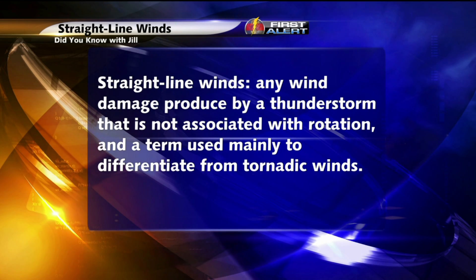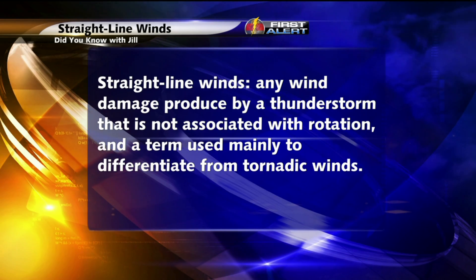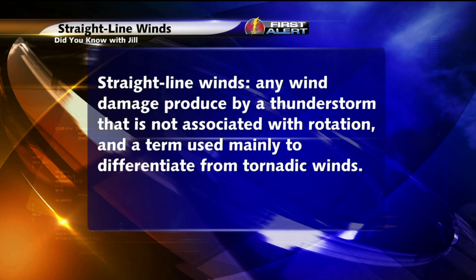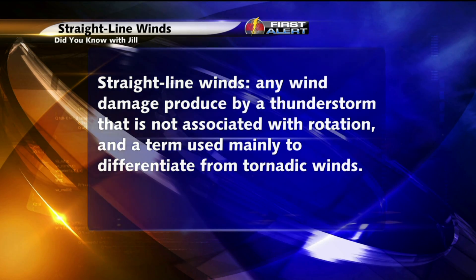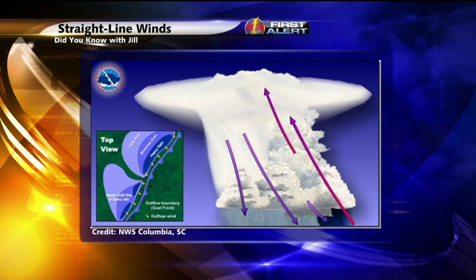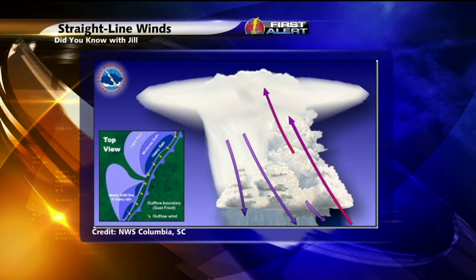Tornadoes are not the only destructive part of a severe thunderstorm. In fact, strong wind gusts can lead to equally great damage, and these winds that are part of a severe thunderstorm but not associated with rotation are known as straight line winds. This term is used mainly to differentiate between wind damage done by a severe thunderstorm and that done by a tornado. Most of these straight line winds develop thanks to the downdraft, or that cool air rushing outside of the thunderstorm.